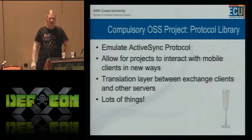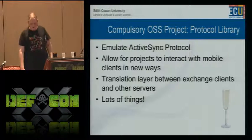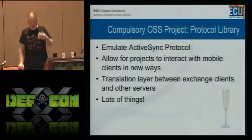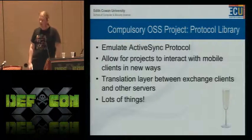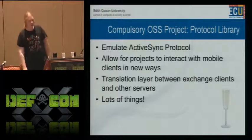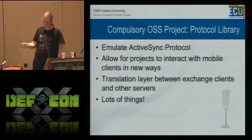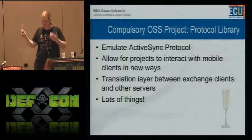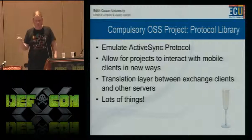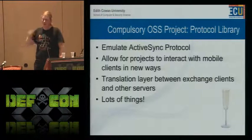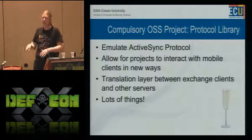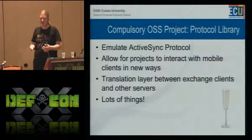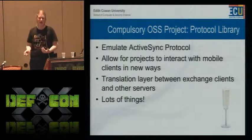Which brings me to the compulsory open source software project announcement. I want to put together a protocol library — I've already started doing a little bit of it — to emulate as much of the ActiveSync protocol as I can. I'm doing this in Python. There's the Android mail client which is open and you can get it all, but it's in Java, and I'll probably just port it to Python and try to implement even the undocumented stuff. Because I want a really good ActiveSync library. I think there's a lot of potential for open source projects to integrate well with Exchange servers, and right now most of them just don't.